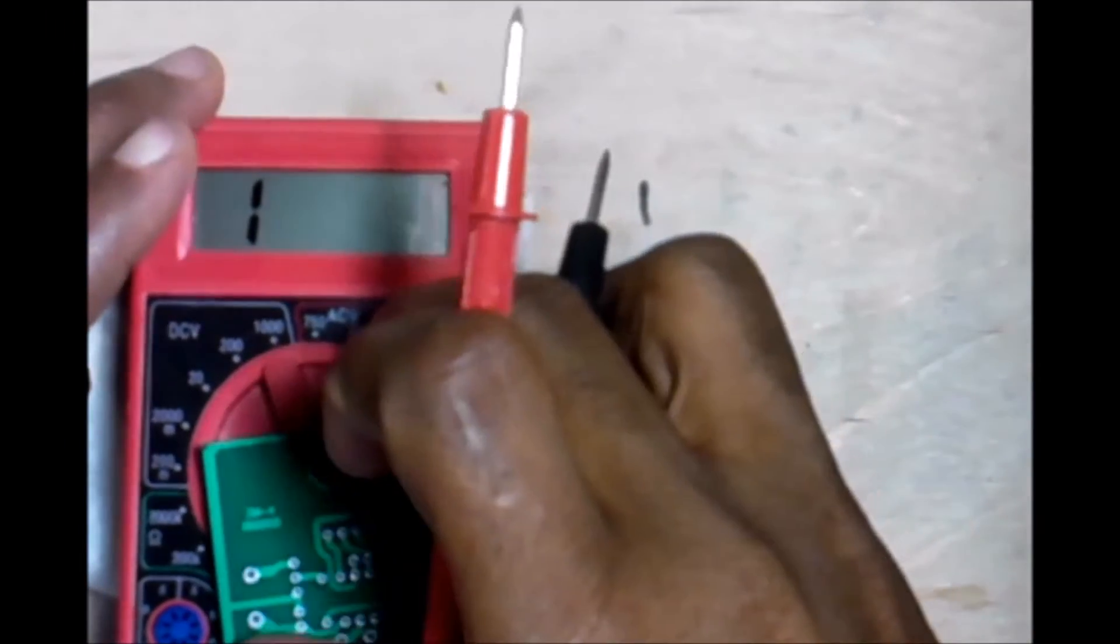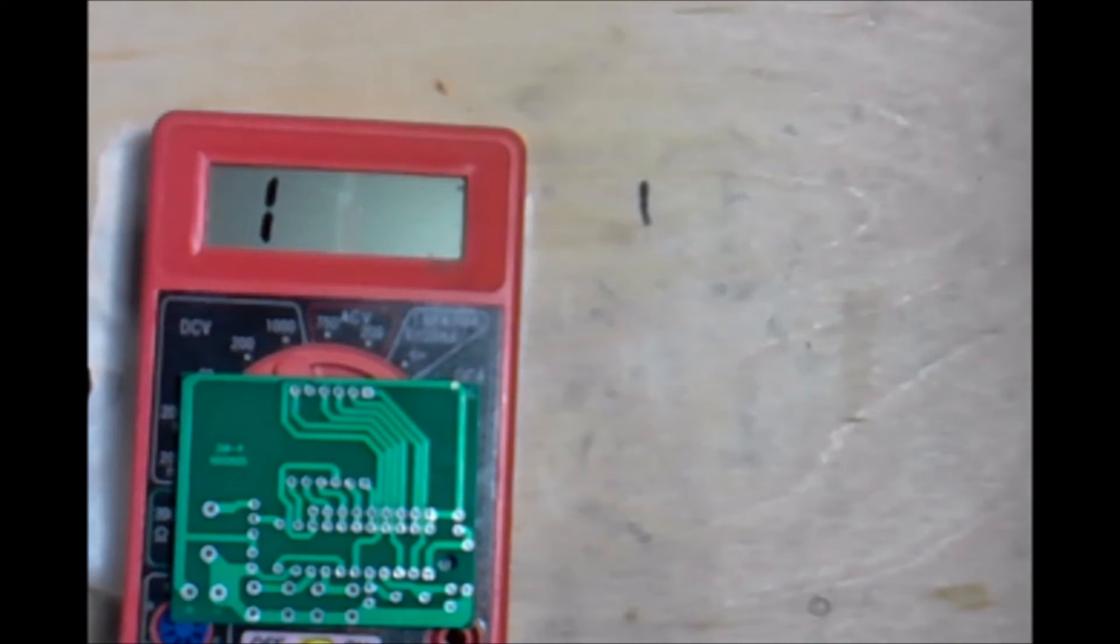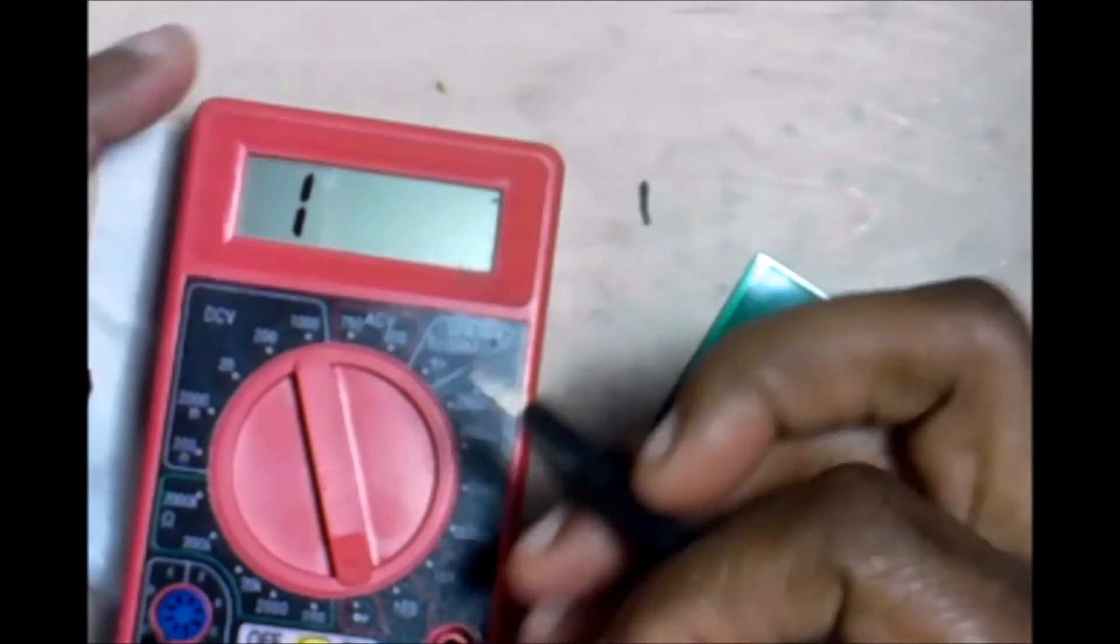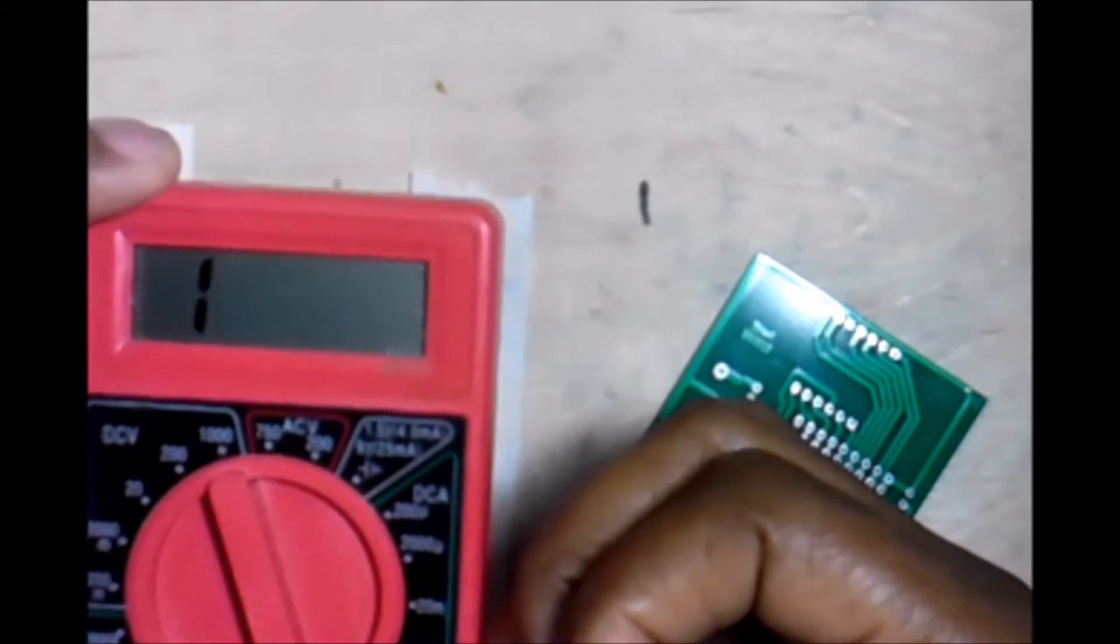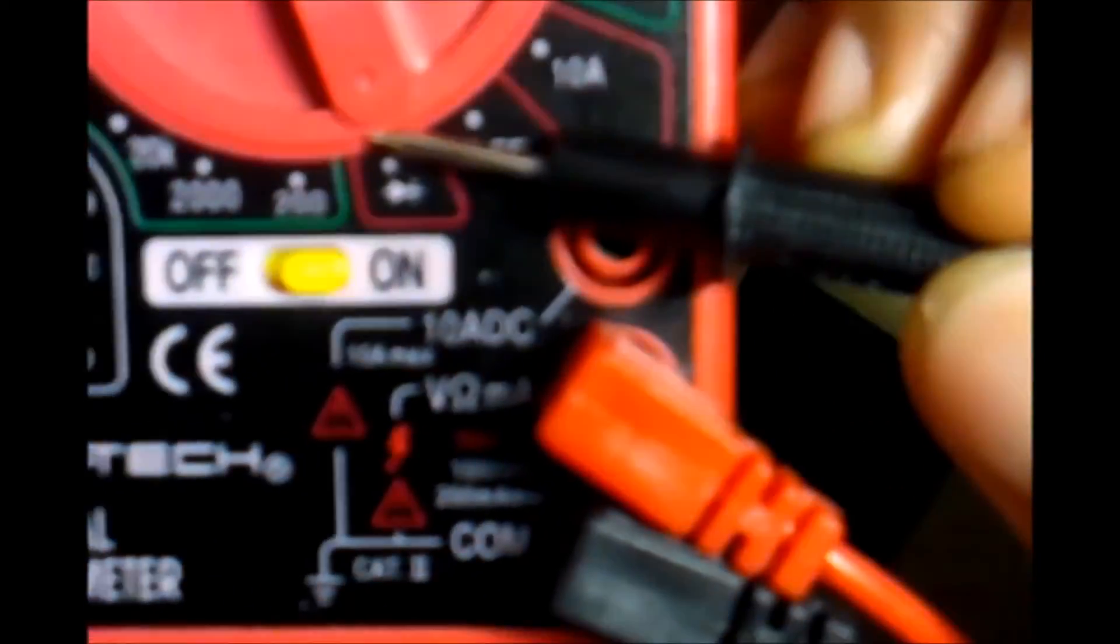If you have your Harbor Freight cheap multimeter and your circuit board, you can still actually work with it. You will put it on the same setting. For this Harbor Freight one, there